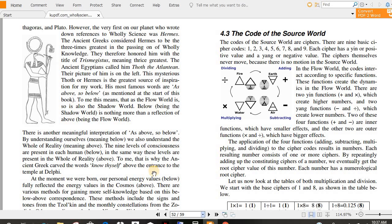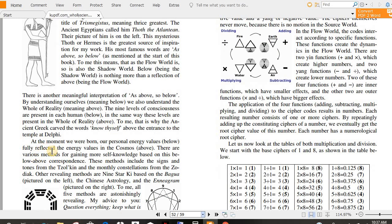To me, that is why the ancient Greeks carved the words, know thyself, above the entrance to the temple at Delphi. At the moment we were born, our energy values below fully reflected the energy values in the cosmos above. There are various methods for gaining more self-knowledge based on this below, above correspondence. These methods include the signs and tones from the Tzolkin and the monthly constellations from the Zodiac.